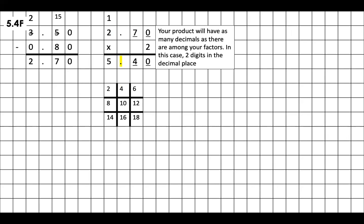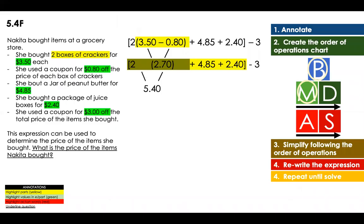Also something important that you have to remember is that your product will have as many decimals as there are among your factors. In this case, two digits in the decimal place. So your factors are 2.70 and the other factor is two. In 2.70, that means you have two decimals. In your product, that is 5.40, you're going to have two decimals. That's a clue that I always like to give you so you can have all these answers correct.